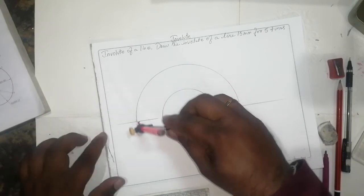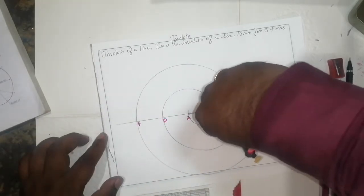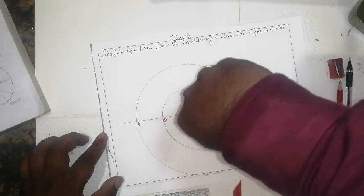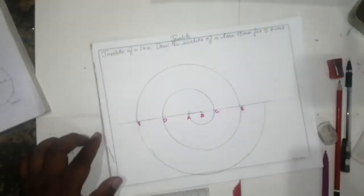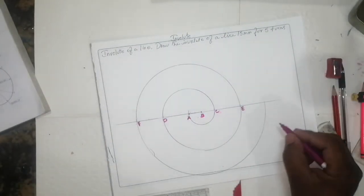Again B to F, one more circle like this, so you will get F.